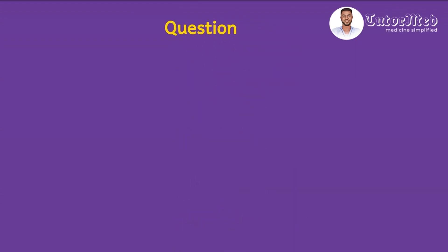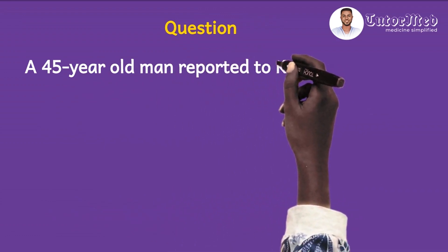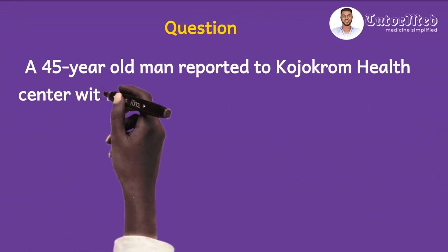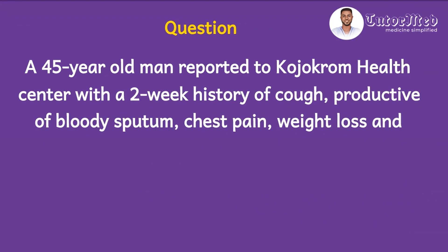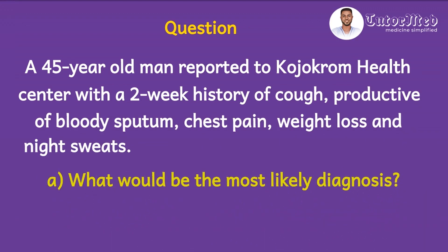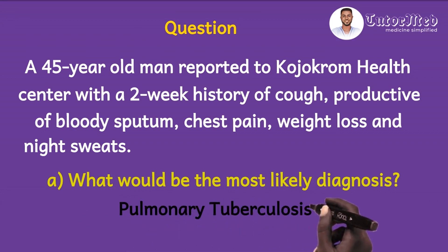Today's clinical case is a pretty straightforward one, so we might not spend so much time deciphering the diagnosis. The question says: a 45-year-old man reported to Kojukrum Health Centre with a two-week history of cough, productive of blood-spitting, chest pain, weight loss and night sweats. The first question asks: what would be the most likely diagnosis? Friends, I know that 100% of us are thinking that this patient has pulmonary tuberculosis, and that is the diagnosis.